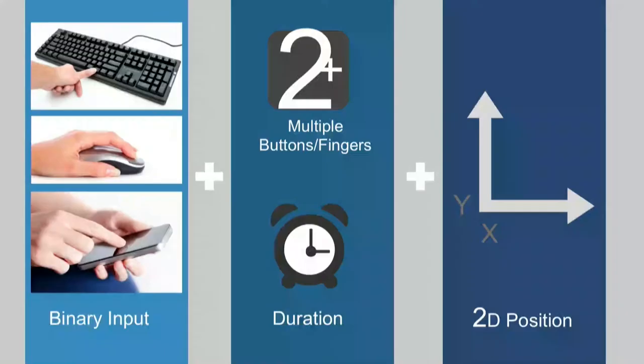But when we look at input in mainstream computing so far, from text input, mouse input, and touch input, we can see that each is primarily binary. Either we're pressing a key, we're clicking a mouse, or we're touching a screen, or we're not. And the possible input combinations for these systems are those binary states multiplied by more of them, by how long we're doing it for, and in the case of the touchscreen and the mouse, where in two dimensions we are, and if we're moving.